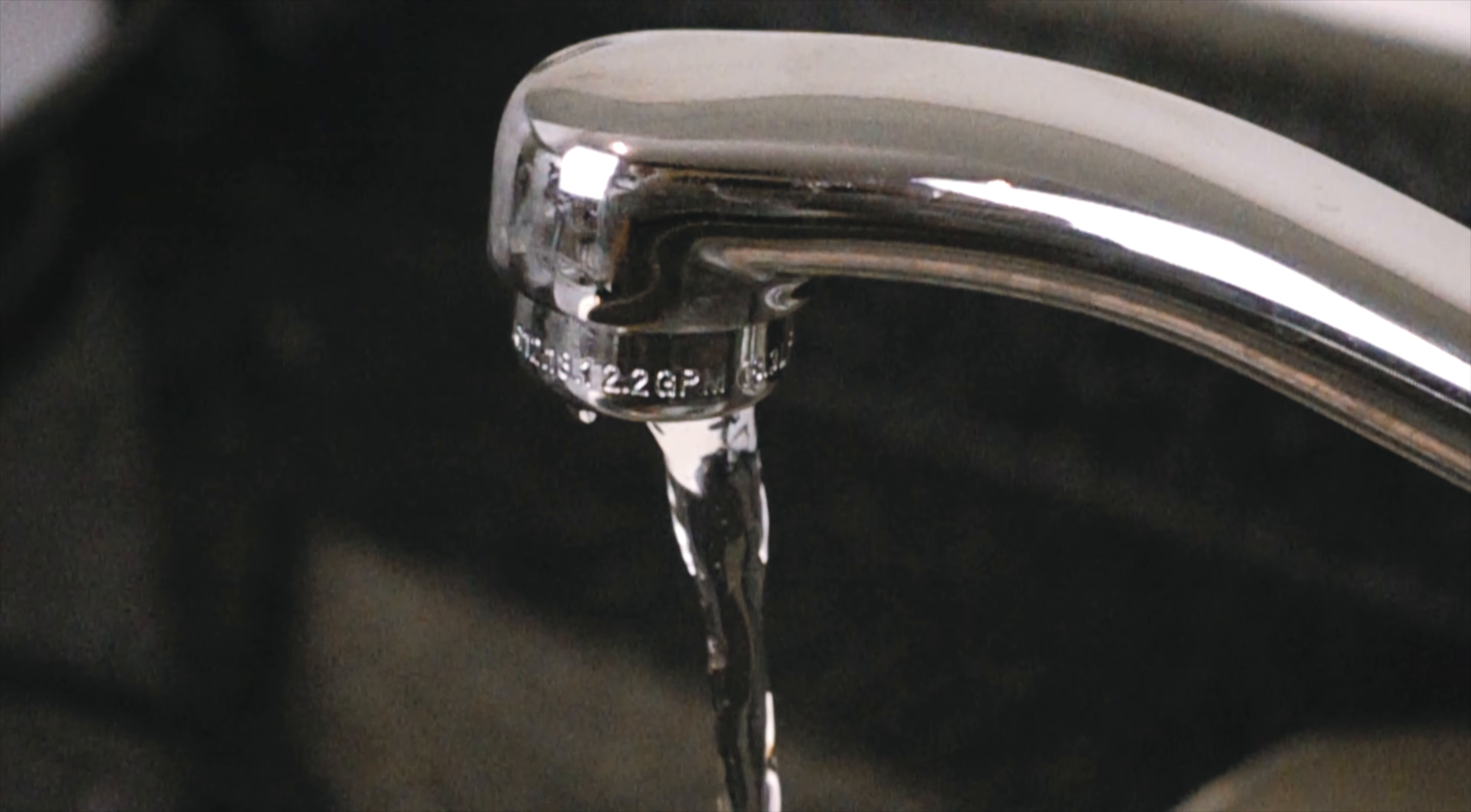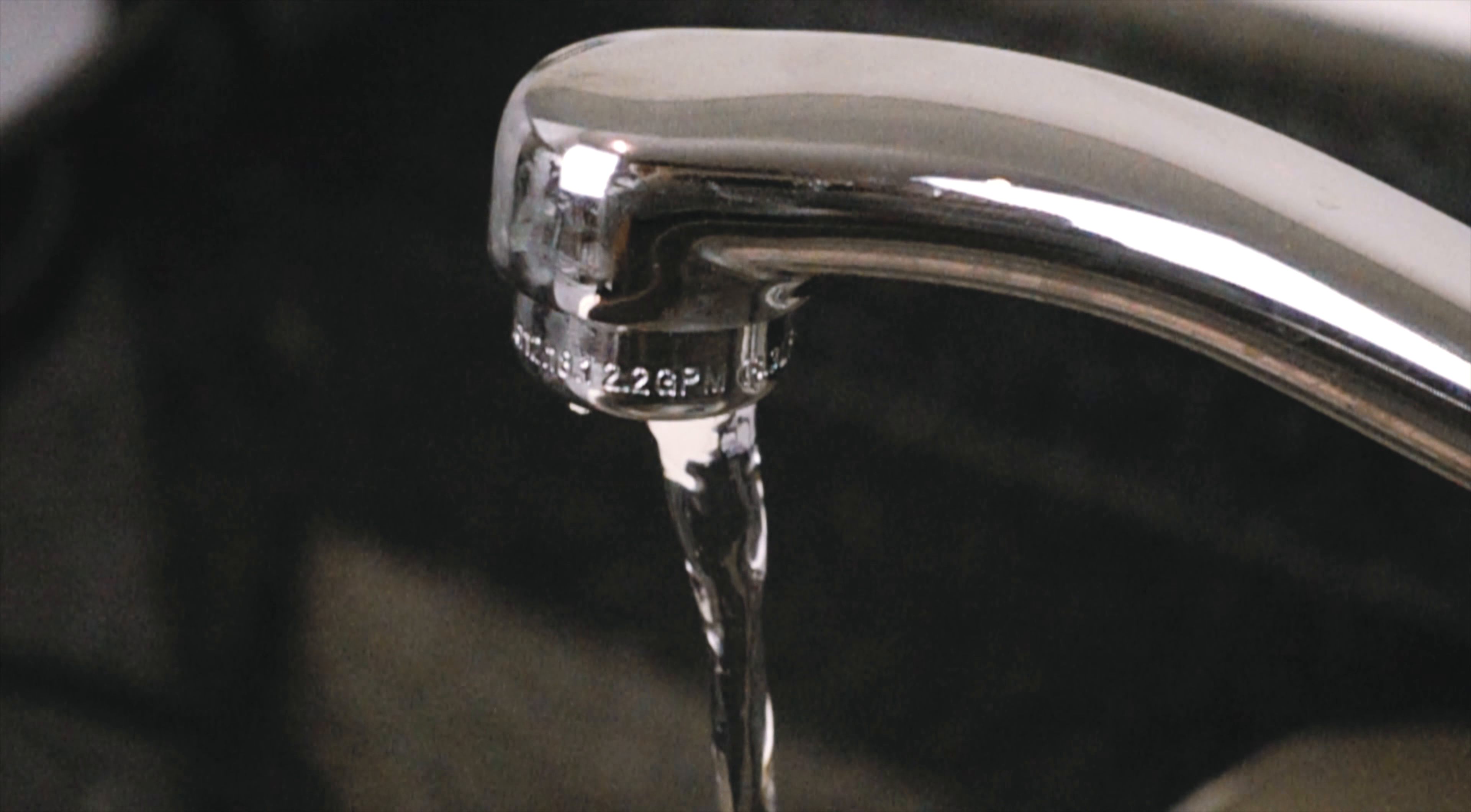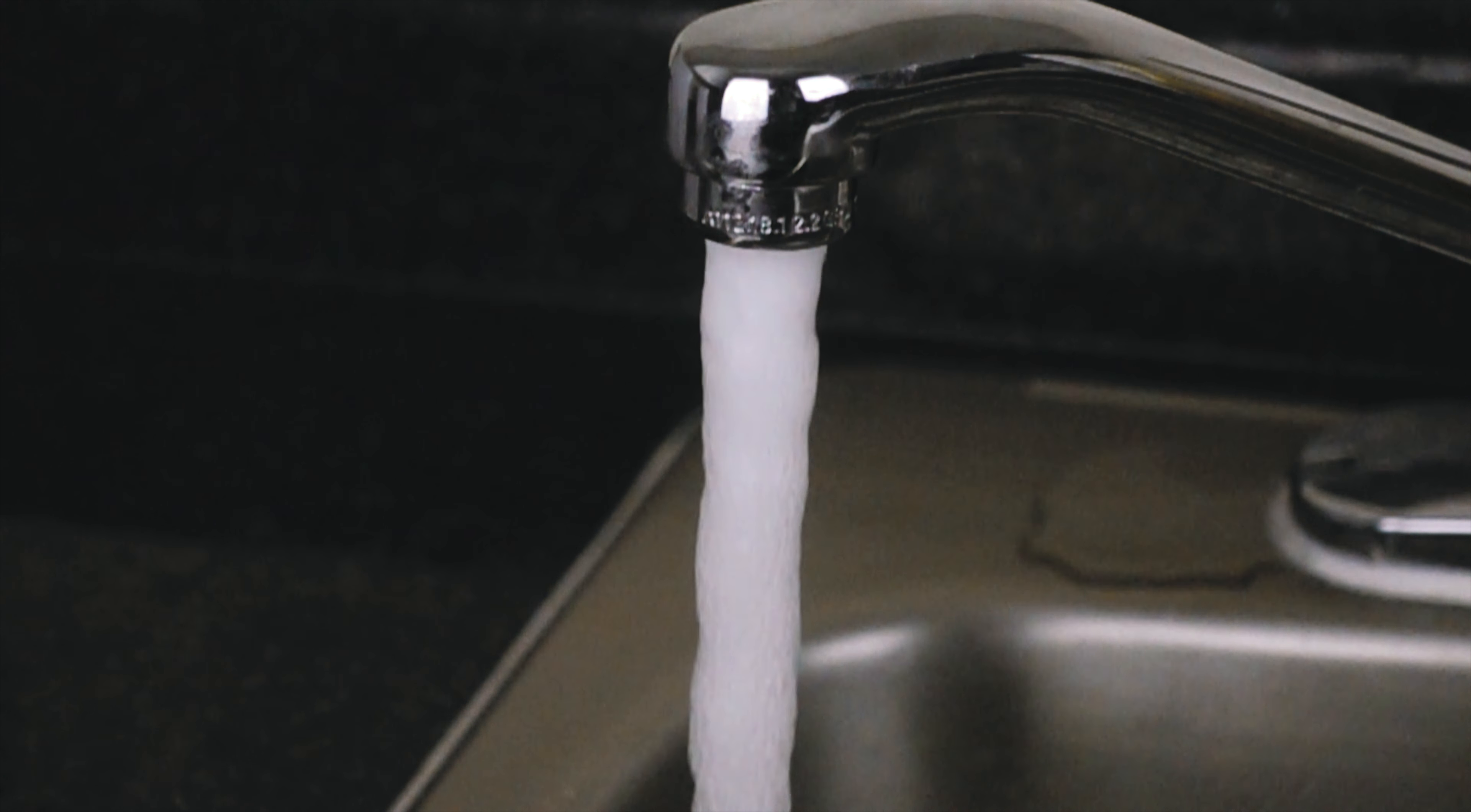Your faucet at home can create water jets that are laminar and turbulent. You just have to adjust it so that it fits each of the flow regimes.